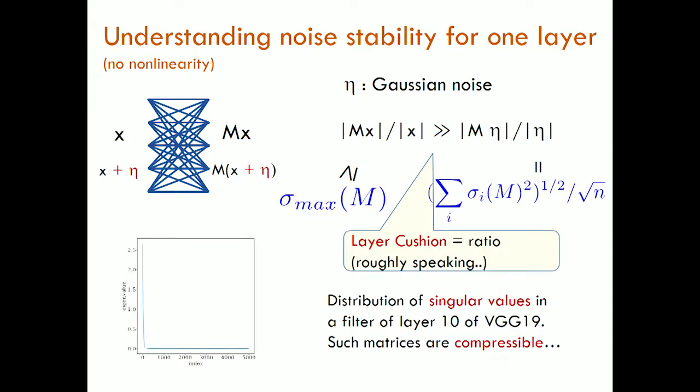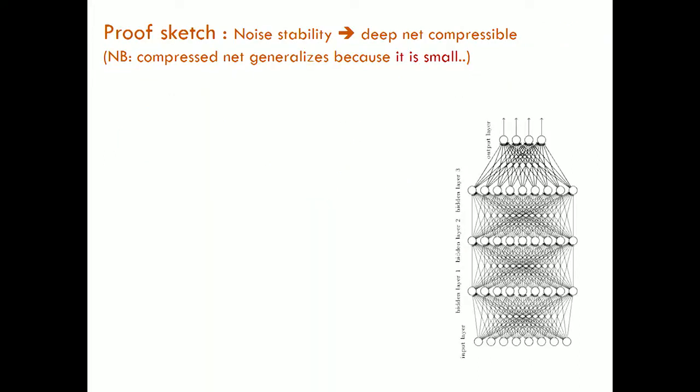The layer cushion is this ratio of how well the matrix transmits data versus noise. Our theory assumes this ratio is good, and the compression is going to use this ratio. Now, noise stability implies the network is highly redundant, and we're going to compress it.